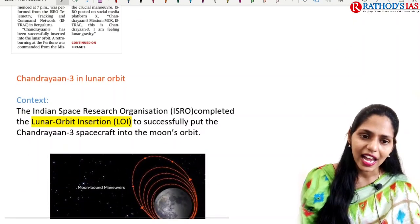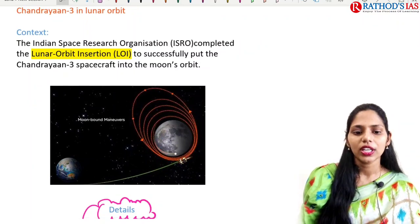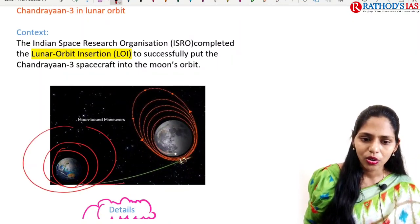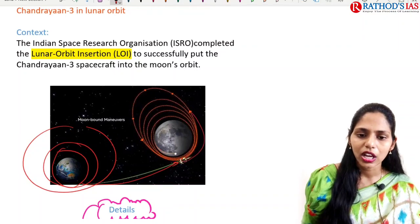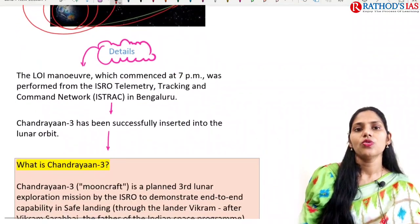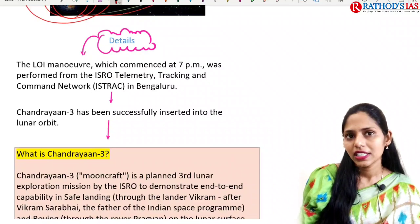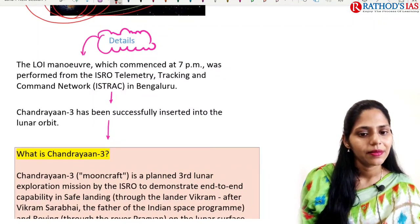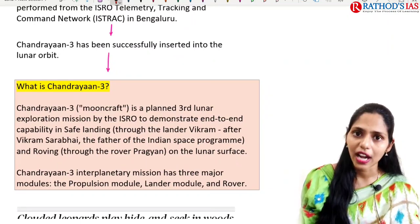If you see the context, ISRO — that is the Indian Space Research Organization — completed the lunar orbit insertion. This means that Chandrayaan-3, which used to revolve around the Earth, has now entered the lunar orbit and is now orbiting around the moon. The lunar orbit insertion was commenced at 7 PM and was performed by ISRO's telemetry tracking and command network. Chandrayaan-3 has successfully inserted into lunar orbit and is now going to orbit around the moon, which is the natural satellite of Earth.